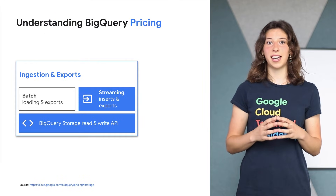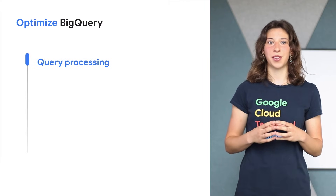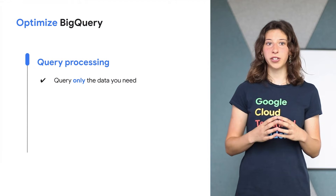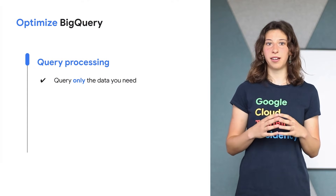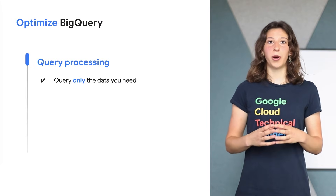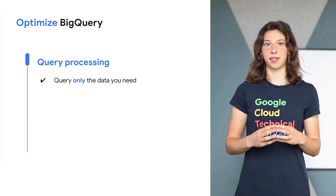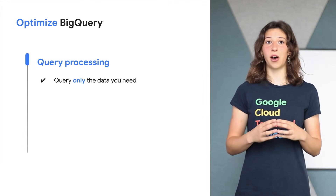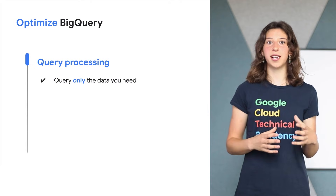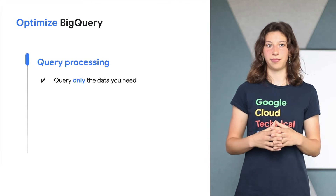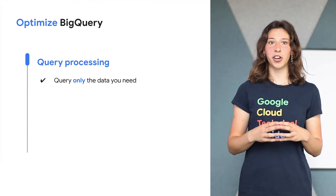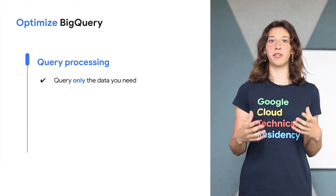There are several ways to optimize performance and cost in BigQuery. For query processing, you should only query the data you need. Use the preview option to explore your data before you write a query — it's free. When you write a query, avoid the SELECT * statement. Filter your query as early and as often as possible, and avoid SQL anti-patterns such as joins that generate more outputs than inputs. Check how much your query will be charged by seeing the number of bytes processed in the UI, or do dry runs to get an estimation of your costs.